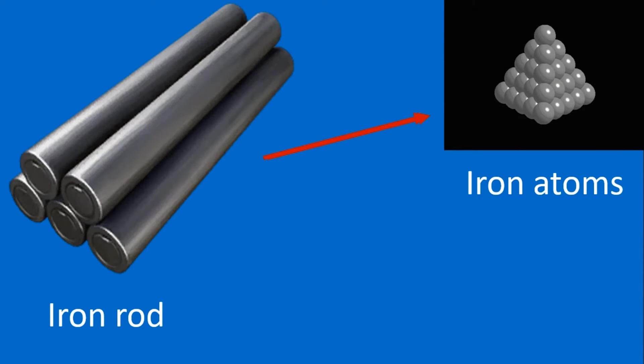In the same way, the smallest unit in an iron rod is an atom. Like that, take any substance - it may be solid, liquid, or gas.